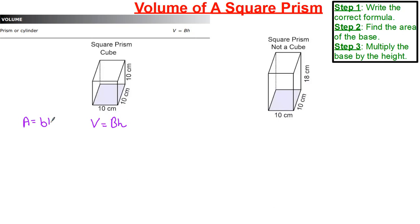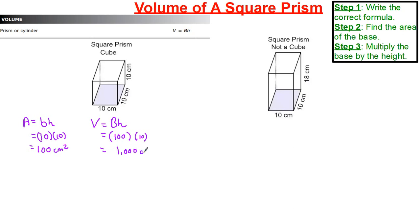Area is equal to base times height. In this case, it's 10 multiplied by 10, which gives us 100 centimeters squared. Now we plug that base in: 100 times our height of 10 gives us a value of 1,000 centimeters cubed. It's cubed since we're dealing with volume and three dimensions.